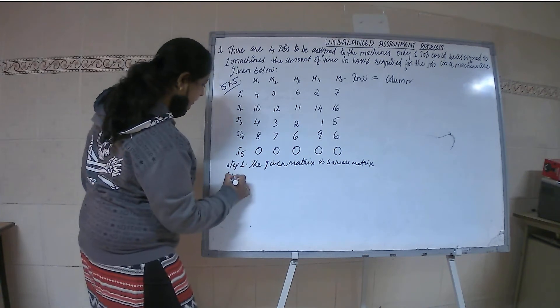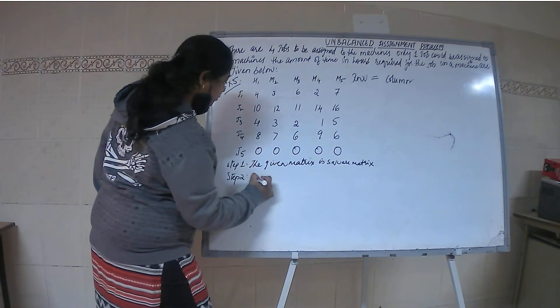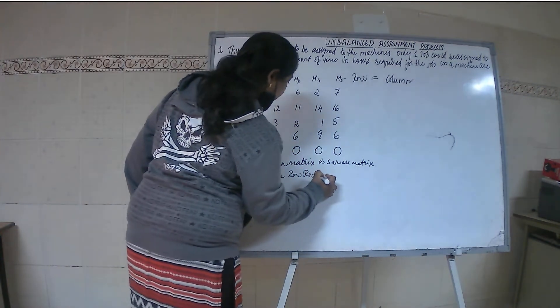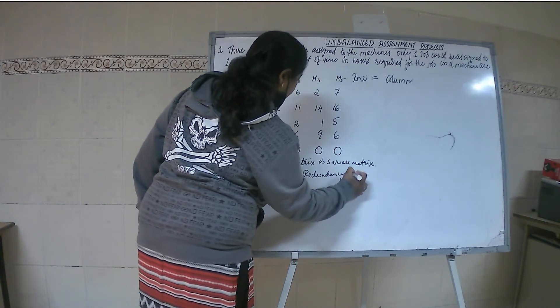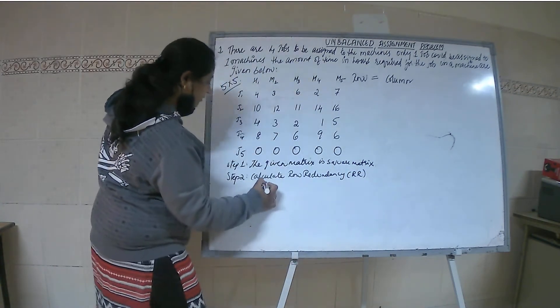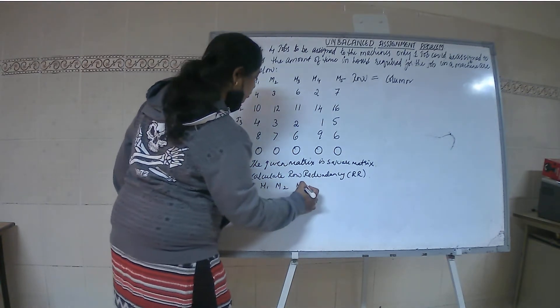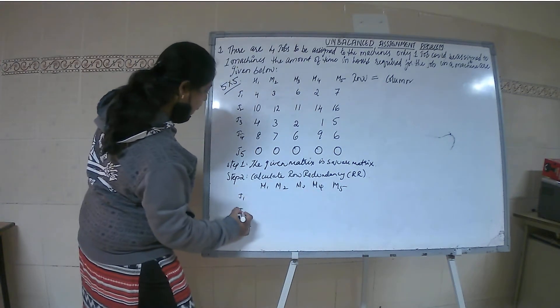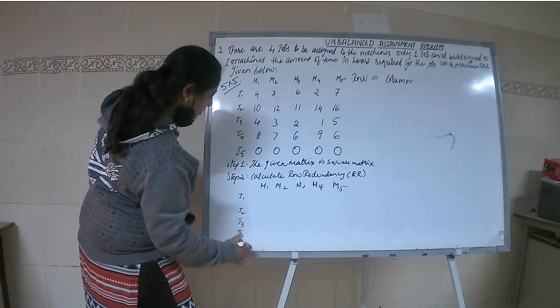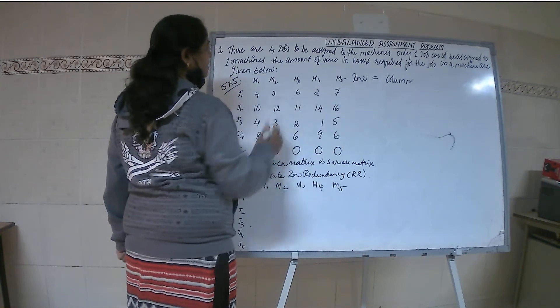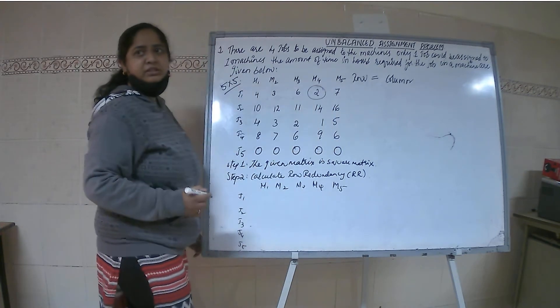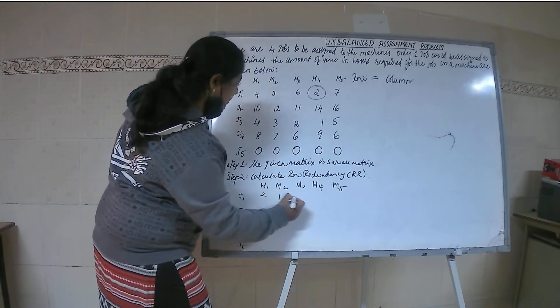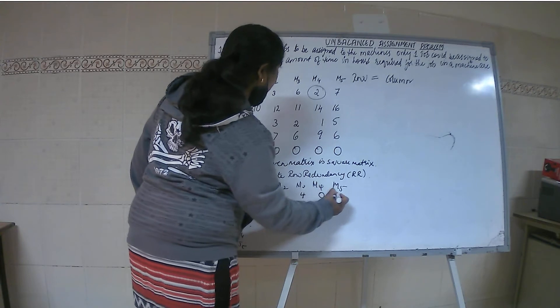Step 2: Calculate row redundancy. For M1, M2, M3, M4, M5 and J1, J2, J3, J4, J5. In this row the minimum value is 2, so the row redundancy is 2, 1, 4, 0, and 5. Next minimum value is 10, giving 0, 2, 1, 4, and 6.